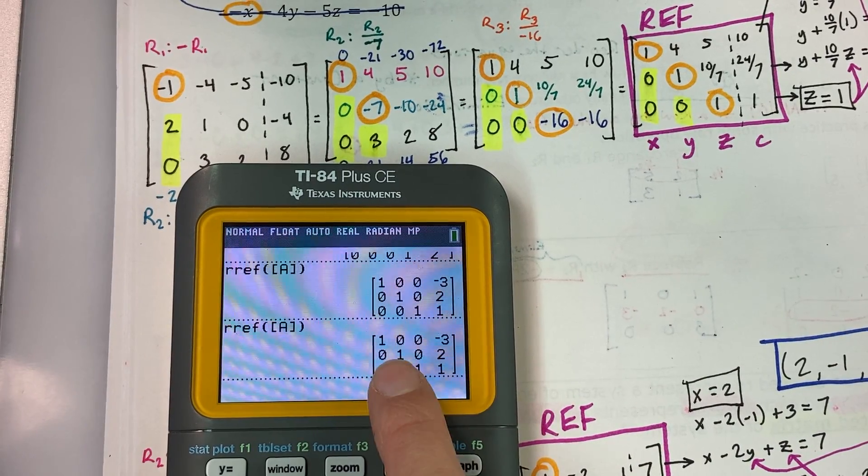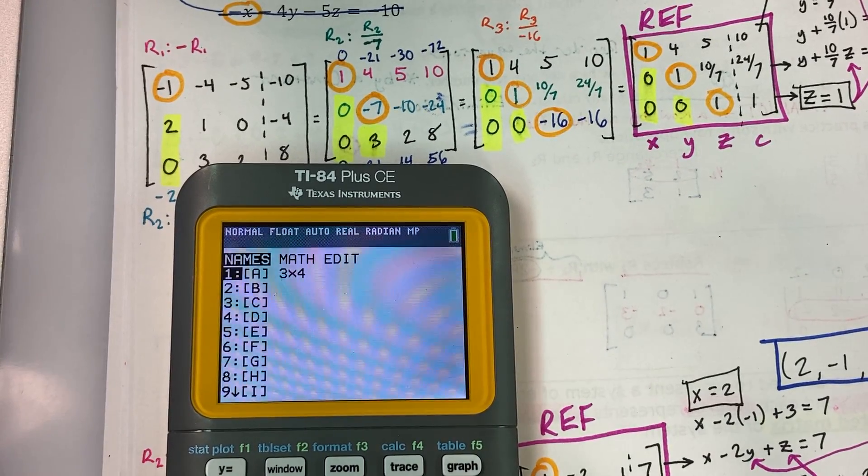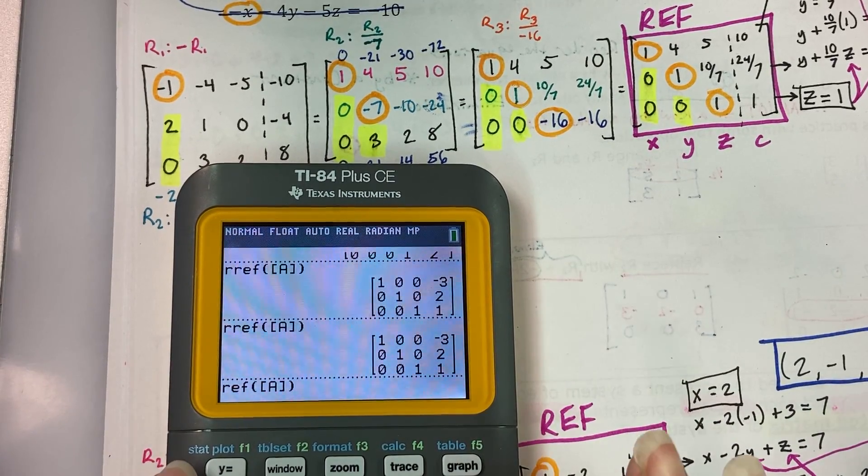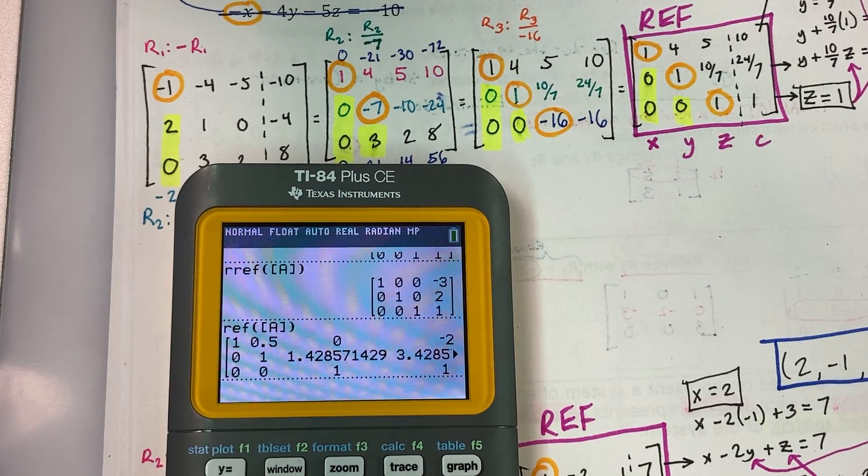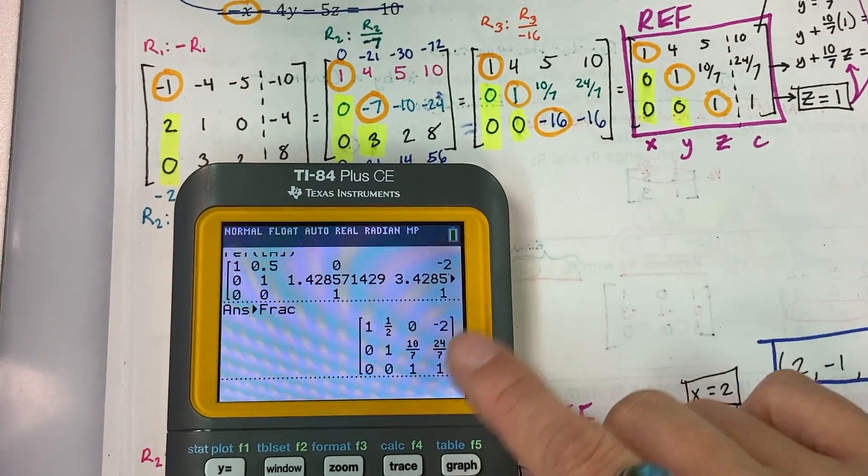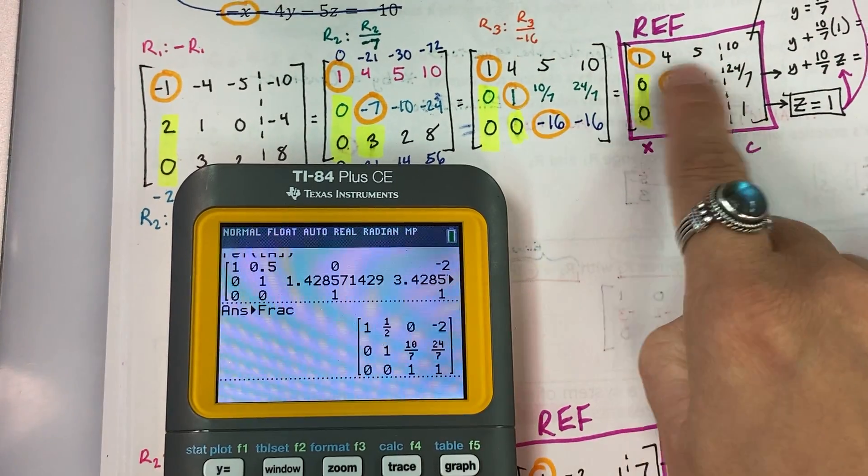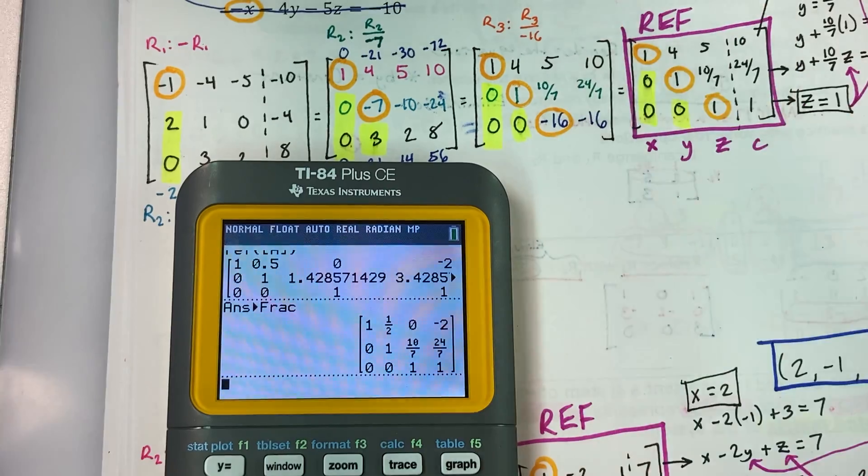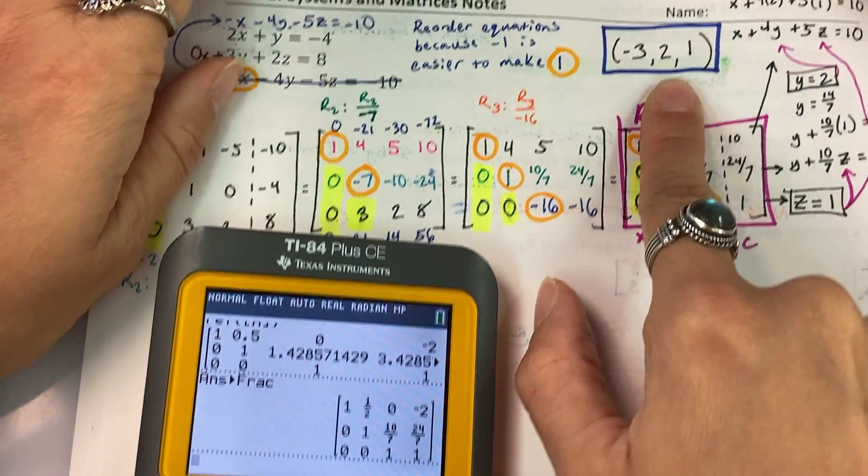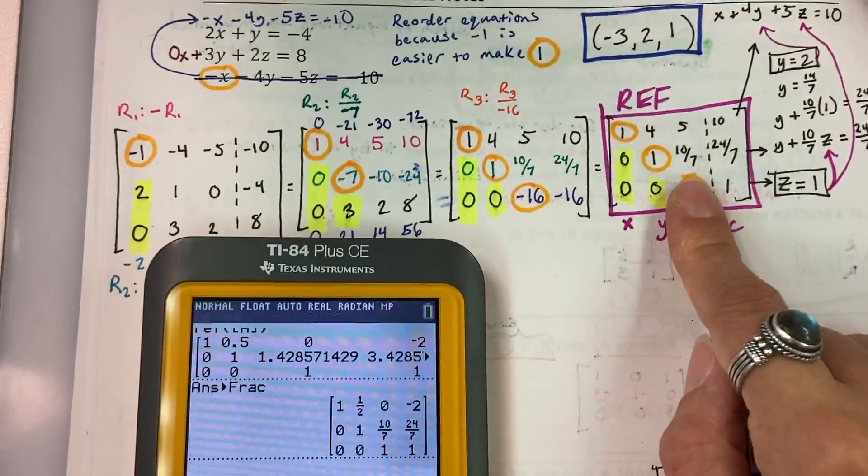Now this shows me that Z equals one, Y equals two, and X equals negative three. Now what happens if I select just row echelon form for matrix A? Ooh, yikes. If I do math, enter, enter on that, notice that we do get a match in the first or in the last two rows, but that top row is different. So this is why folks reduced row echelon form is how you want to check your coordinate solution, but you won't always have a match with row echelon form to your row echelon form matrix.